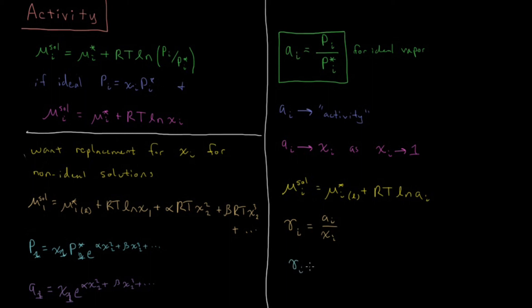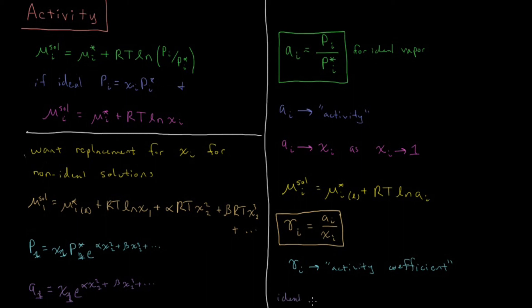This γ_i here is the activity coefficient — an important result worth noting. A solution is ideal if the activity coefficient equals one for all components at all mole fractions.